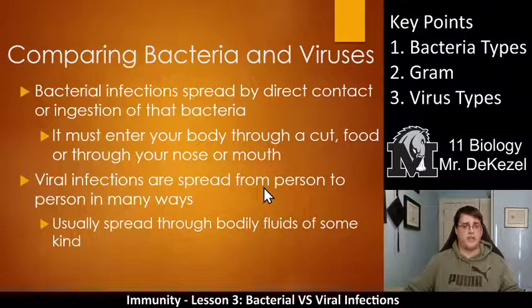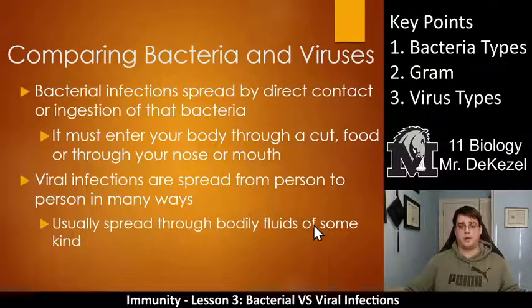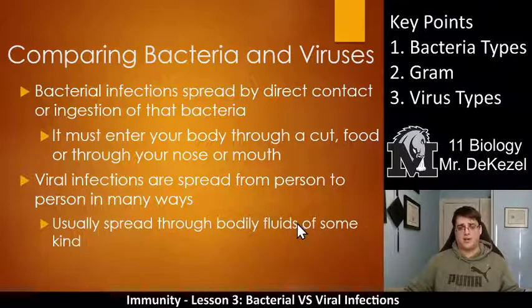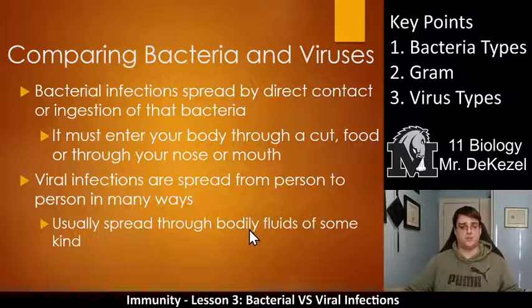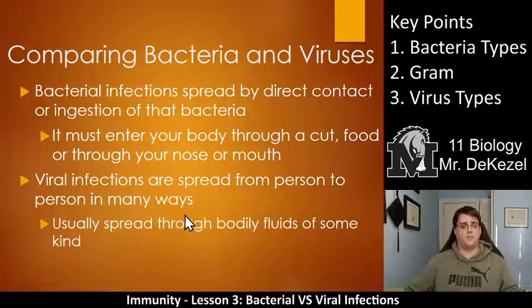Viral infections can be spread from person to person or animal to person in many different ways. It is usually some form of bodily fluid, whether that be respiratory droplets, diarrhea, or sexually transmitted diseases spread through sexual fluids. They usually require person-to-person contact but can be transmitted in a few different ways.